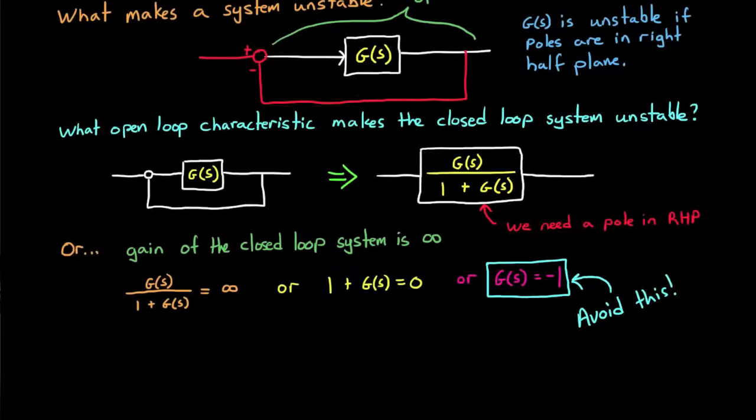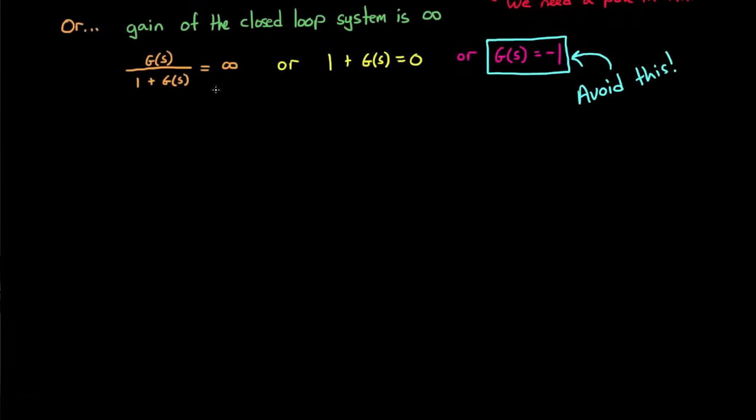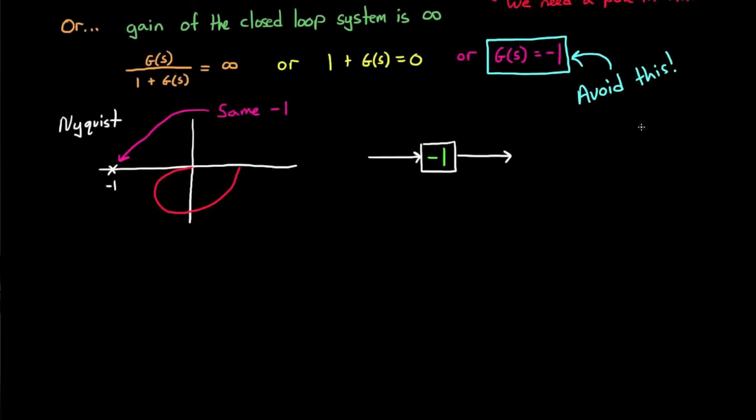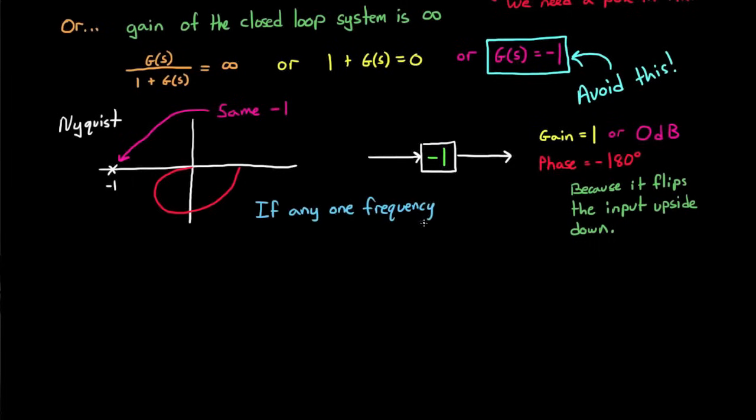Aha! So we just need to keep our open-loop system, g of s, away from minus 1, and our closed-loop system will be stable. The minus 1 point should sound familiar to you, because it's the exact same minus 1 point that you're also trying to avoid on a Nyquist plot. And the gain of a minus 1 system is 1, or 0 decibels, because it doesn't scale the input by any factor. And the phase is minus 180 degrees because it flips the input upside down, which is a phase shift of half of a wavelength.